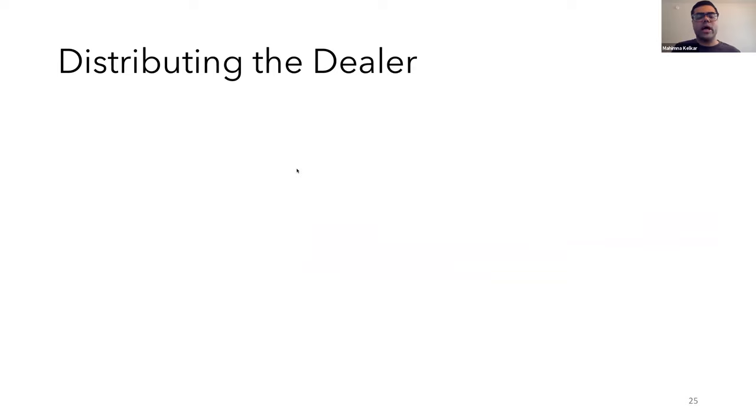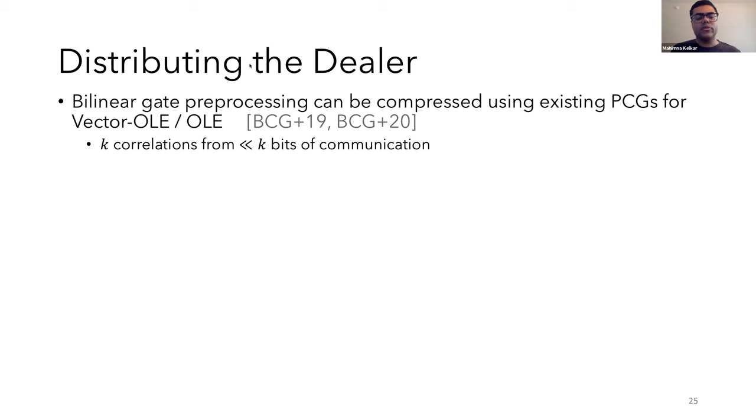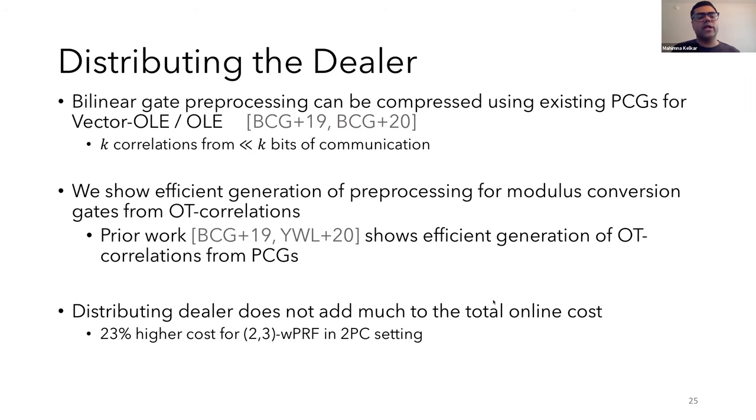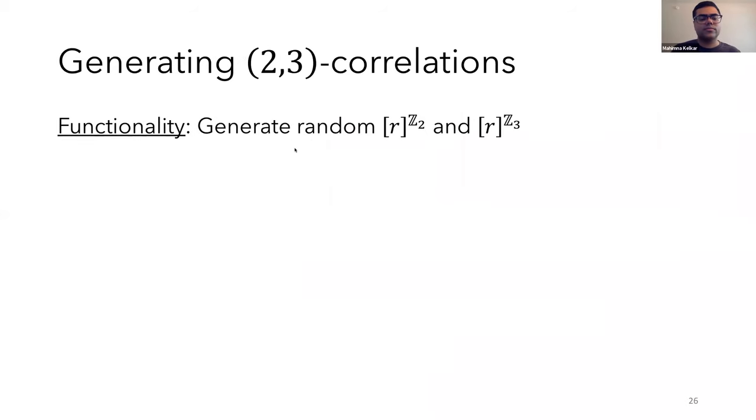Now, as I mentioned earlier, I'll talk briefly about how we can distribute the dealer. For the bilinear gate, the preprocessing used can be easily compressed using existing PCGs for OLE and vector OLE. And this results in getting k correlations with far fewer than k bits of communication. For modulus conversion gates, we show how to efficiently generate preprocessing from OT correlations. And since OT correlations can be easily compressed with PCGs, this implies that all of our preprocessing can be efficiently generated. Overall, distributing the dealer does not actually add too much to the online cost. So as a concrete example, for the 2PC setting with a 2-3-week PRF, the total online cost is only 23% higher.